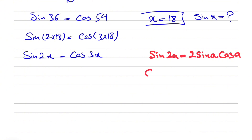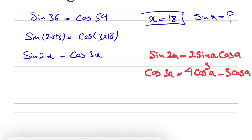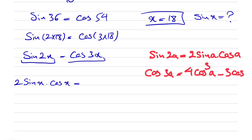The other formula is cosine of 3a equals 4 cosine cubed of a minus 3 cosine of a. These two are really important here. So we put sine of 2x as 2 sine x cosine x, and cosine of 3x as 4 cosine cubed of x minus 3 cosine of x.